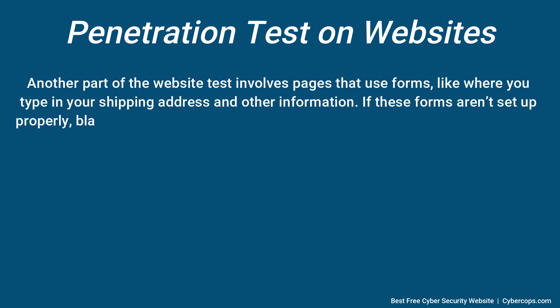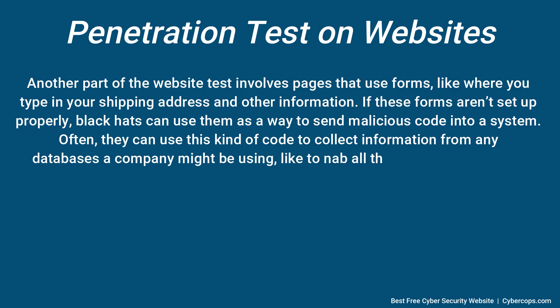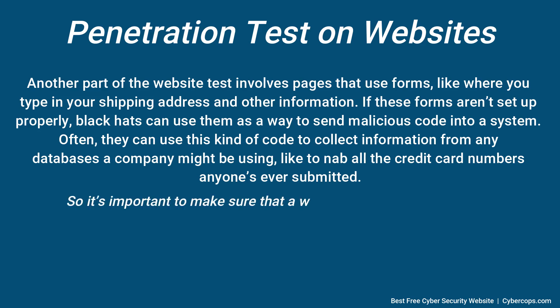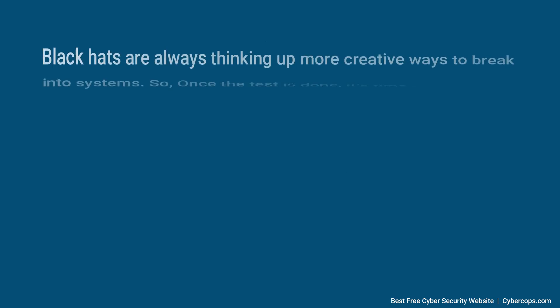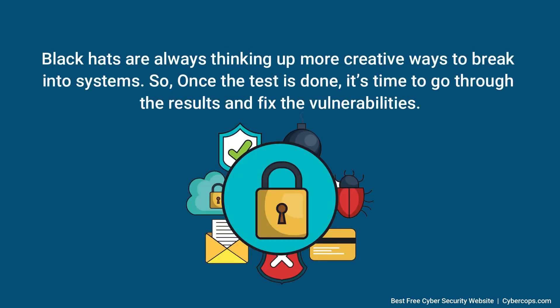Another part of the website test involves pages that use forms, like where you type in your shipping address or fill out questions and passwords. If these forms aren't set up properly, black hats can use them as a way to send malicious code into a system. Often, they can use this kind of code to collect information from any databases a company might be using, like nabbing all the credit card numbers anyone's ever submitted. So it's important to make sure that a website checks its form inputs for anything that looks suspicious, and to test those protections by trying to break through them yourself. Black hats are always thinking up more creative ways to break into systems, so once the test is done, it's time to go through the results and fix the vulnerabilities.